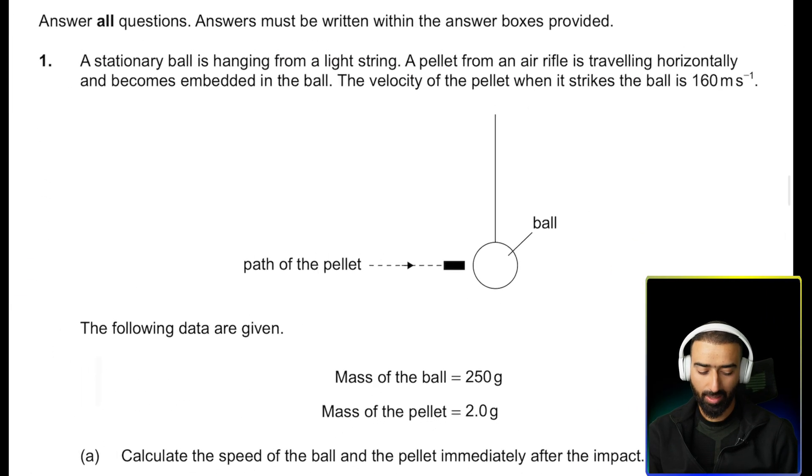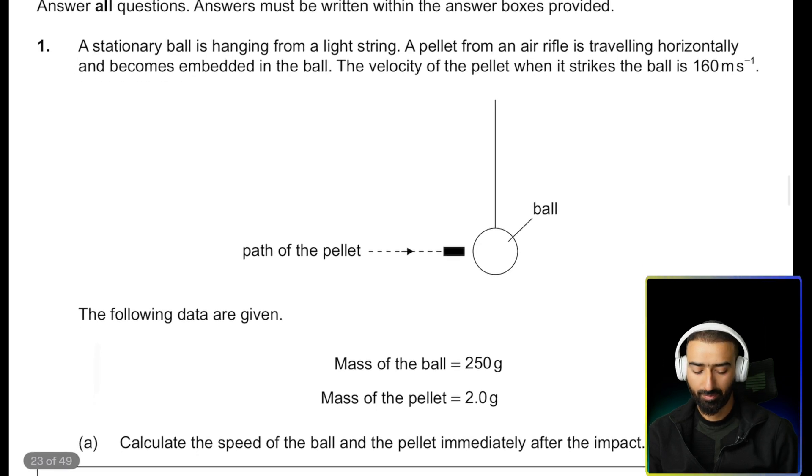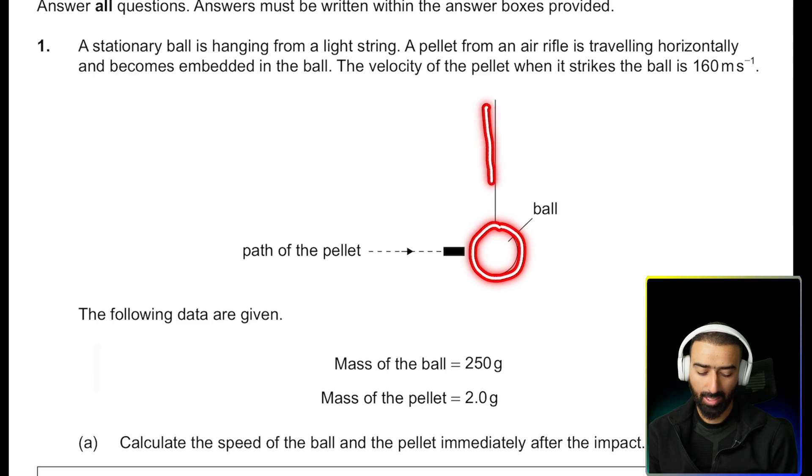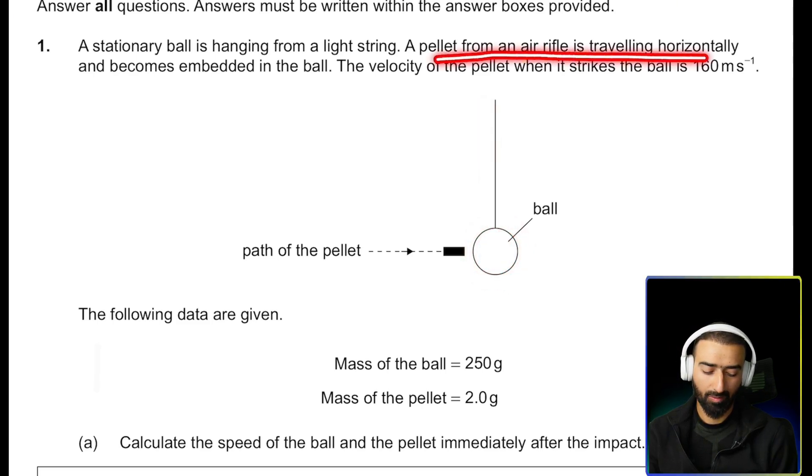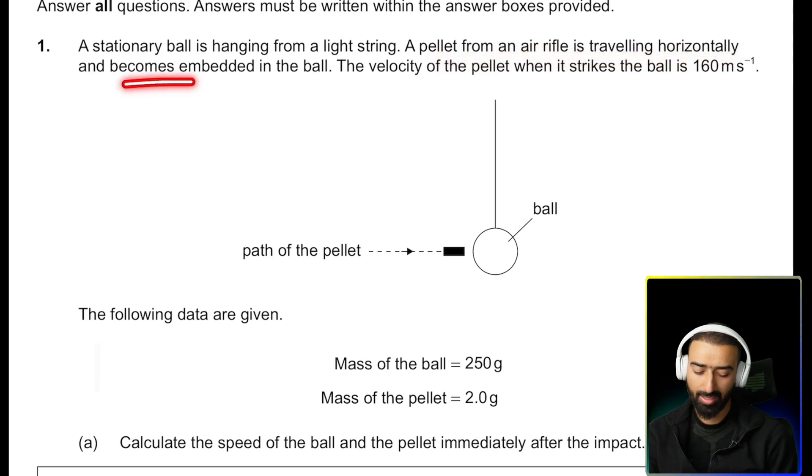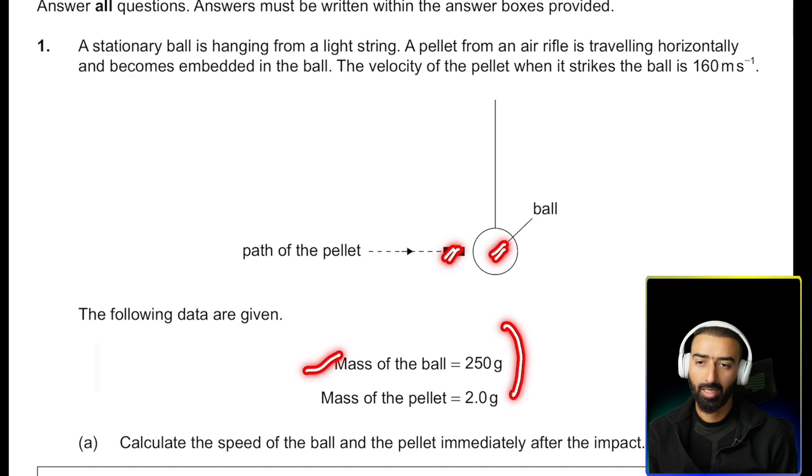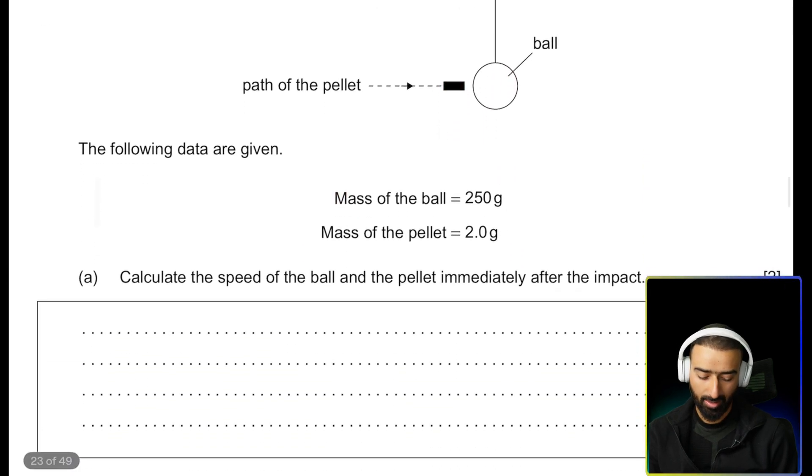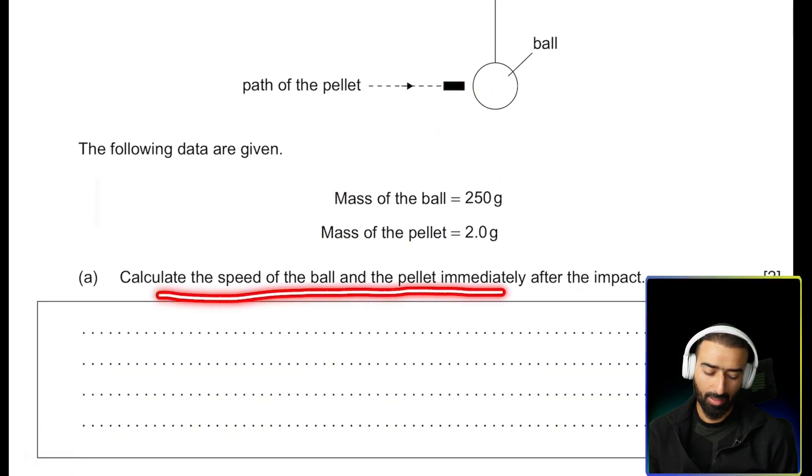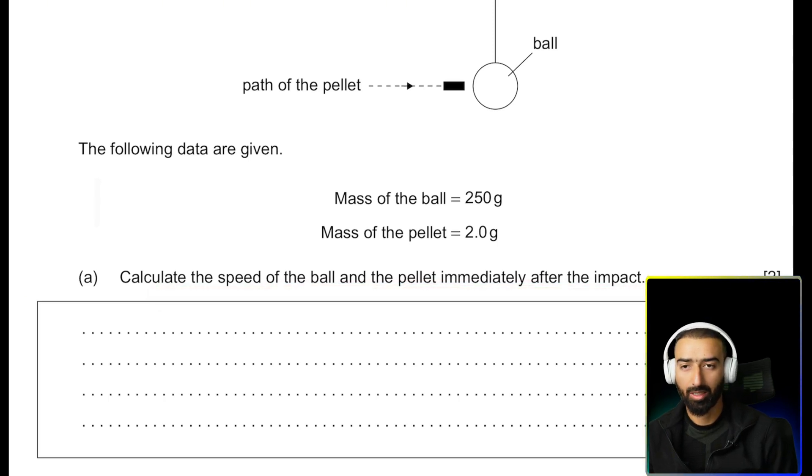Okay, here we have the first problem. It says that we have a stationary ball that's hanging from a light string and a pellet from an air rifle is traveling horizontally and gets embedded in the ball. The velocity of the pellet when it strikes the ball is given. We have been given the mass of the ball, the mass of the pellet, and we are supposed to find, calculate the speed of the ball and the pellet immediately after the impact.